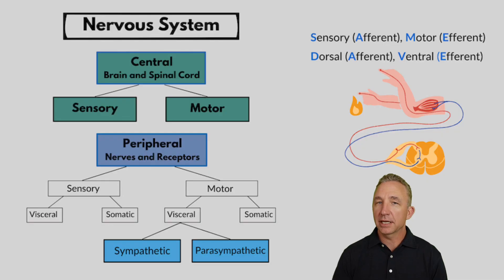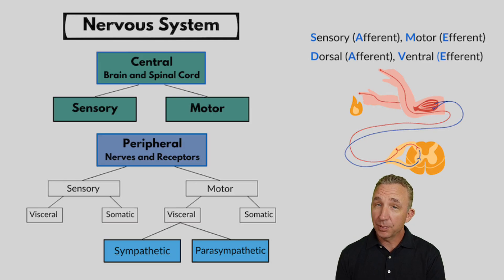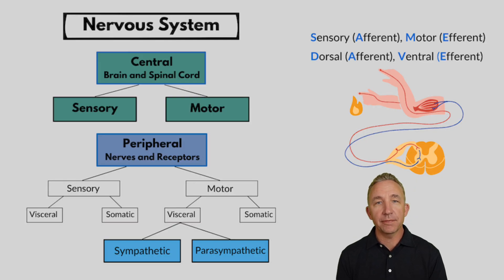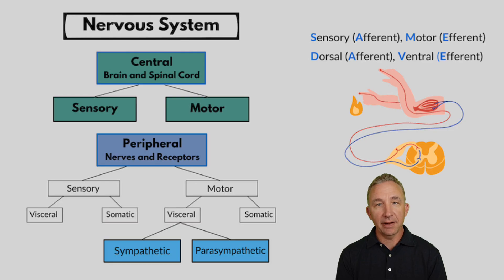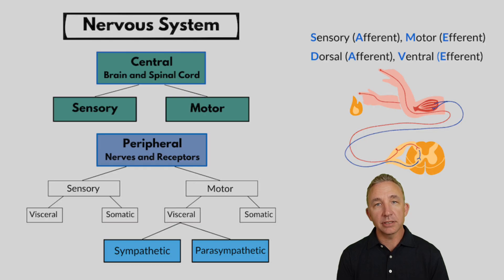Let's start by understanding there are two systems in the body for the nervous system: the central nervous system and the peripheral nervous system. The central nervous system I've often referred to as the parents — they're the ones leading and coordinating the activities of the body. That's the brain and the spinal cord. Central nervous system: brain and spinal cord, simple as that.